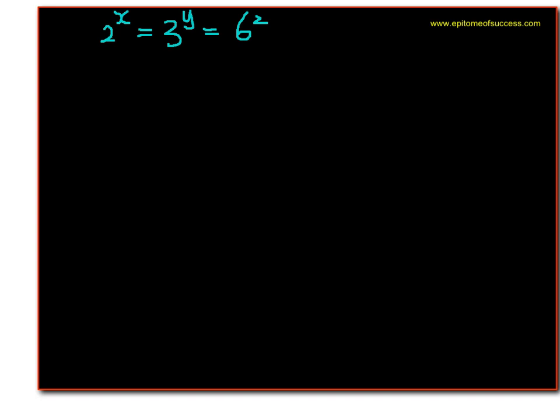Now this is a pretty interesting question because everybody can see that 2 times 3 is equal to 6. However, you can't use 2 times 3 equals 6 in this question because there's a power x and power y and power z there which obviously makes them a different value.